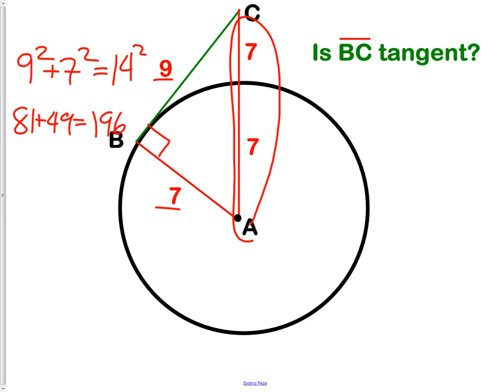Add the 81 and the 49 together and you're going to see that 130 equal to 196 is not a true statement. So, the question of is BC tangent would have to be no, because the Pythagorean theorem did not work for this question.